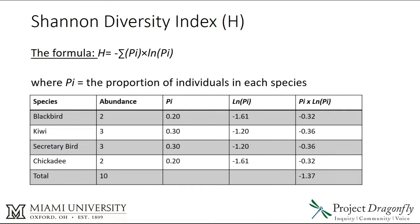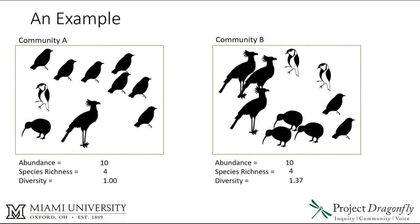In Community B, we had blackbirds with an abundance of 2, kiwi with 3, secretary bird with 3, and chickadee with 2 — so it's a little more balanced. Running through the proportions, multiplying by the natural log of those proportions, the total comes to negative 1.37, so the Shannon Diversity Index is 1.37. Even though abundance and species richness are the same for both communities, the Shannon Diversity Index shows that Community B is more diverse than Community A.